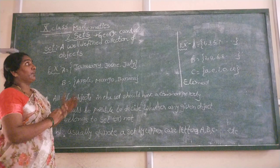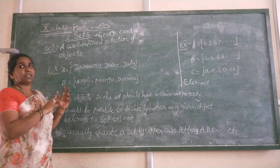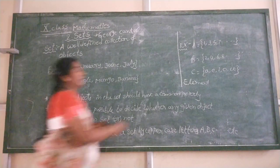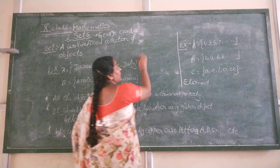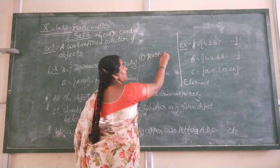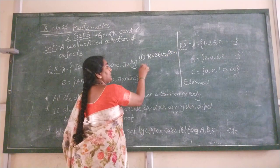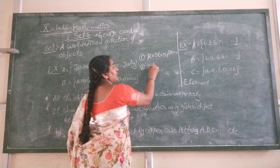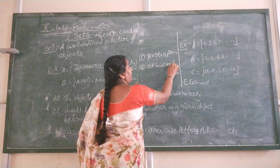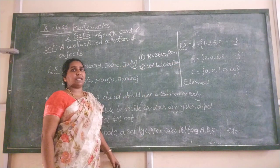Sets are described in two types. The first one is roster form, also called list form. The second one is set builder form, also called characterized form.